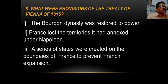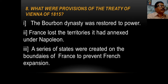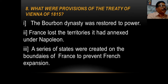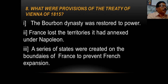Point number one: the Bourbon dynasty was restored to power — the Bourbon dynasty, which was removed from power earlier, was given power back. Point number two: France lost the territories it had annexed under Napoleon — France lost all the territories it had added during Napoleon's rule.